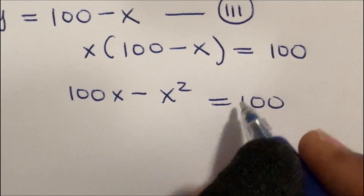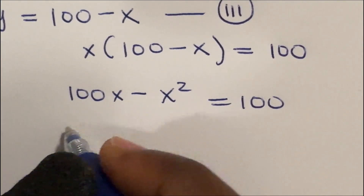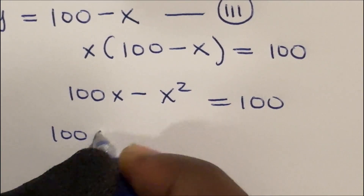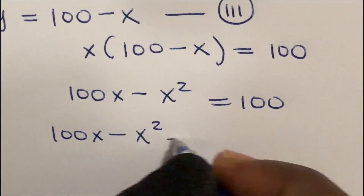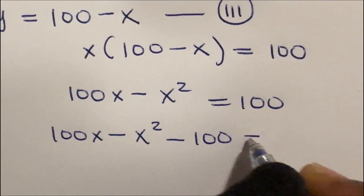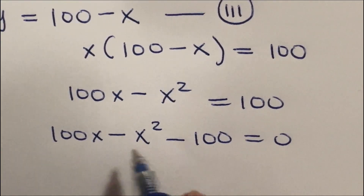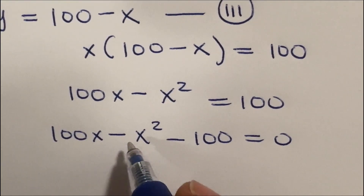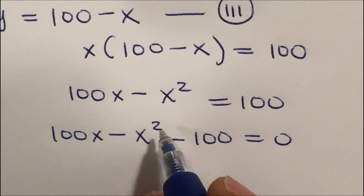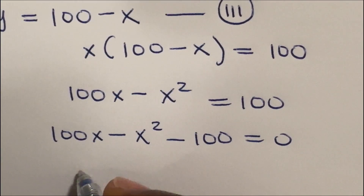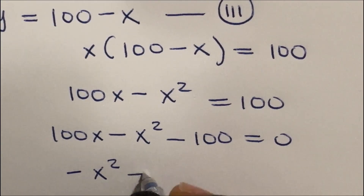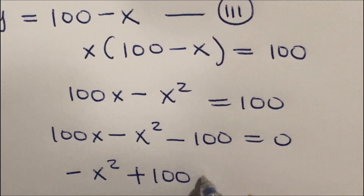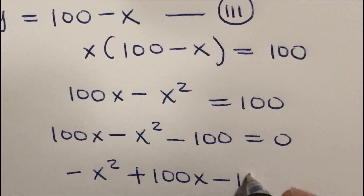I can bring this 100 to the left-hand side to give me 100x minus x squared minus 100 is equal to 0. Now let us arrange this in descending power of x: negative x squared plus 100x minus 100 is equal to 0.